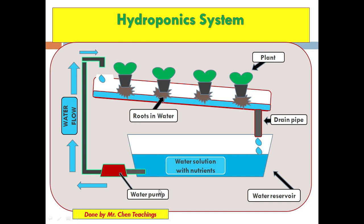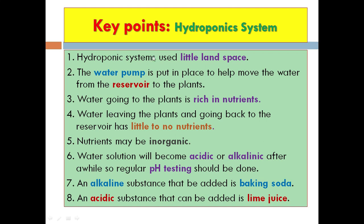The third important part is the water pump. The hydroponic system is installed with a water pump that draws water from the reservoir and takes it up to the container with the plants, supplying them with nutrients and water. The roots of the plants are in this water that is constantly moving. So the main parts are: the water reservoir, the water pump, the container with the plants, and the plants themselves.